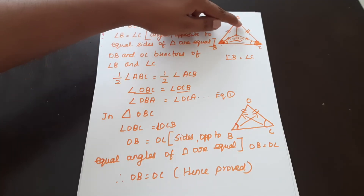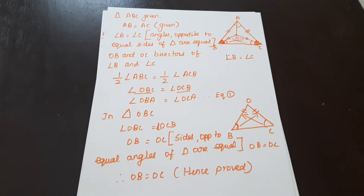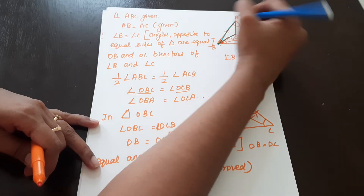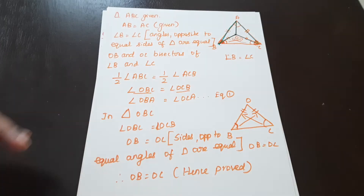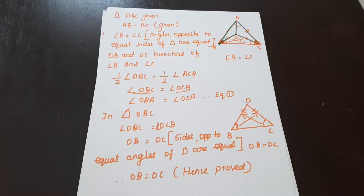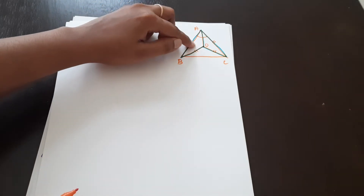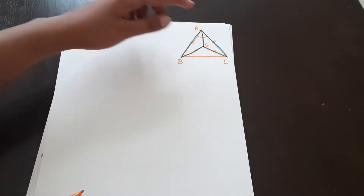These two angles are equal. This we have to prove. These two triangles are congruent. The corresponding angles are equal. Now we have to apply the two triangles, and the corresponding angles are equal.